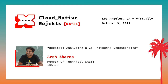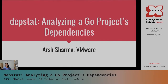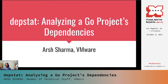Up first is Arsh Sharma, member of technical staff from VMware, talking about the importance of tracking dependencies in a large project like Kubernetes, and about Depstat, which is a tool created to track dependency updates to the Kubernetes codebase. Hello everyone, and welcome to Cloud Native Rejekts. I am Arsh, and I work at VMware. I'm also on the current Kubernetes release team. This session is going to be about how we use a tool called Depstat to evaluate dependency updates in the upstream Kubernetes project.